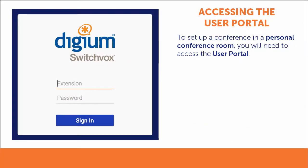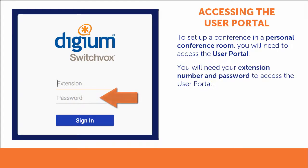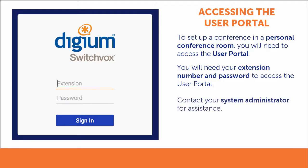Before setting up a conference in a personal conference room, you will need to access the user portal. To access the user portal, you will need your extension number and password. If you do not have this information, contact your system administrator.